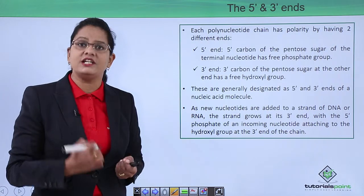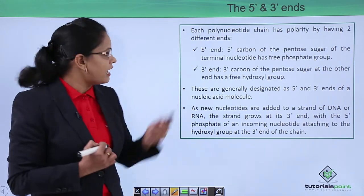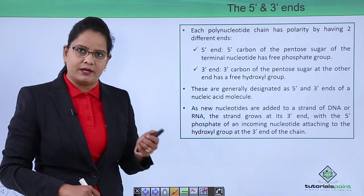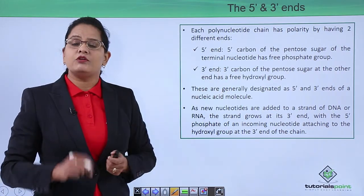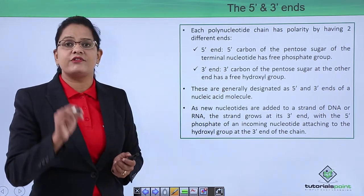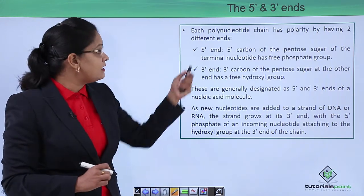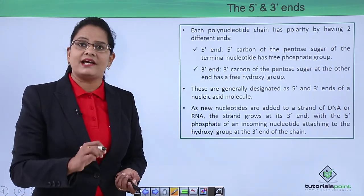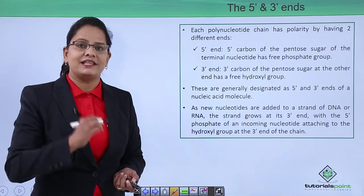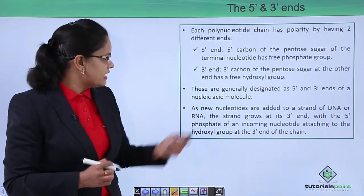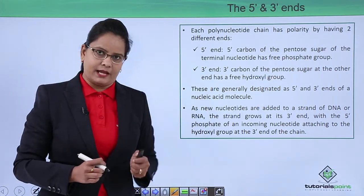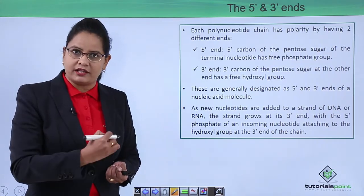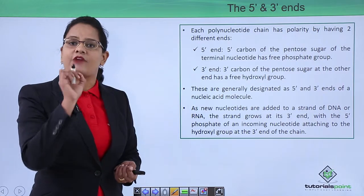The polynucleotide chain has two ends: a five prime end and a three prime end. At the five prime end, the five prime carbon of the pentose sugar has a free phosphate group. Similarly, at the three prime end of the pentose sugar there is a free hydroxyl group, and that is the reason the polarity is described as five prime to three prime. As new nucleotides are added, they join from the five prime phosphate and combine with the three prime hydroxyl of the existing chain.